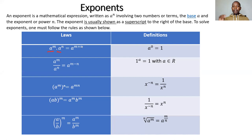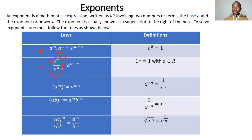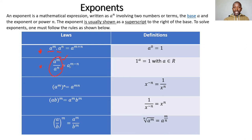That's our first law of exponents. The second law covers division: 'a to the power m' divided by 'a to the power n', same base but now dividing. The top power m subtracts the bottom power n, giving 'a to the power m minus n'. When exponents of the same base divide, top power minus bottom power.